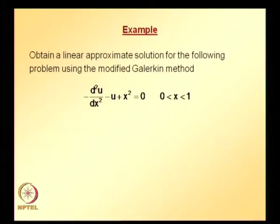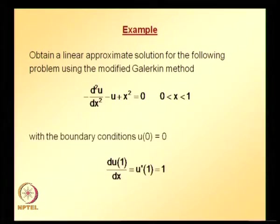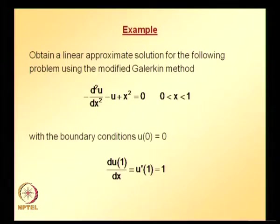The problem statement is: obtain a linear approximate solution using the modified Galerkin method. The differential equation and problem domain are given — it is a second-order differential equation. You can verify using the thumb rule that the first boundary condition is the essential boundary condition and the second is the natural boundary condition.